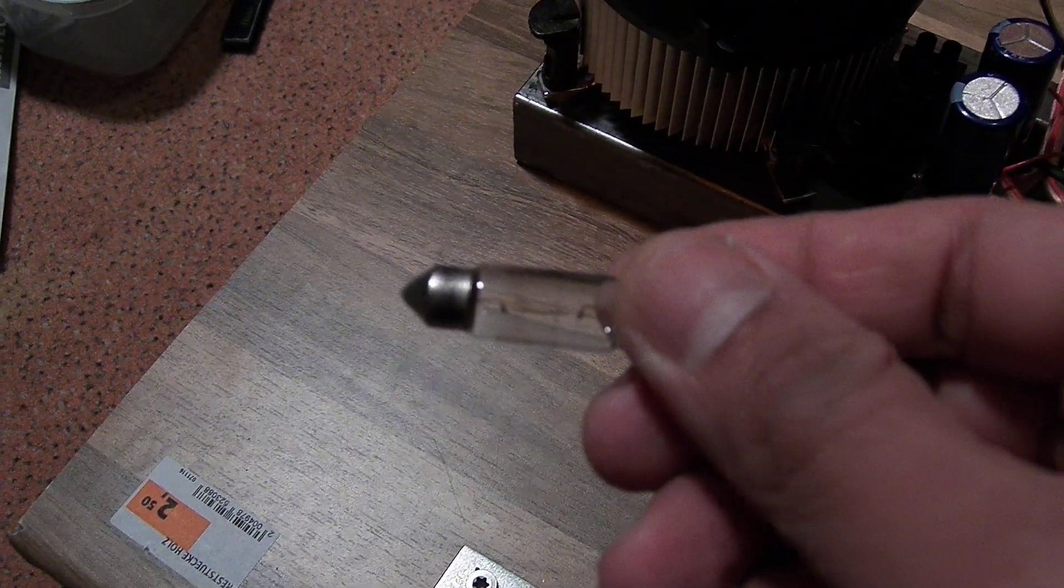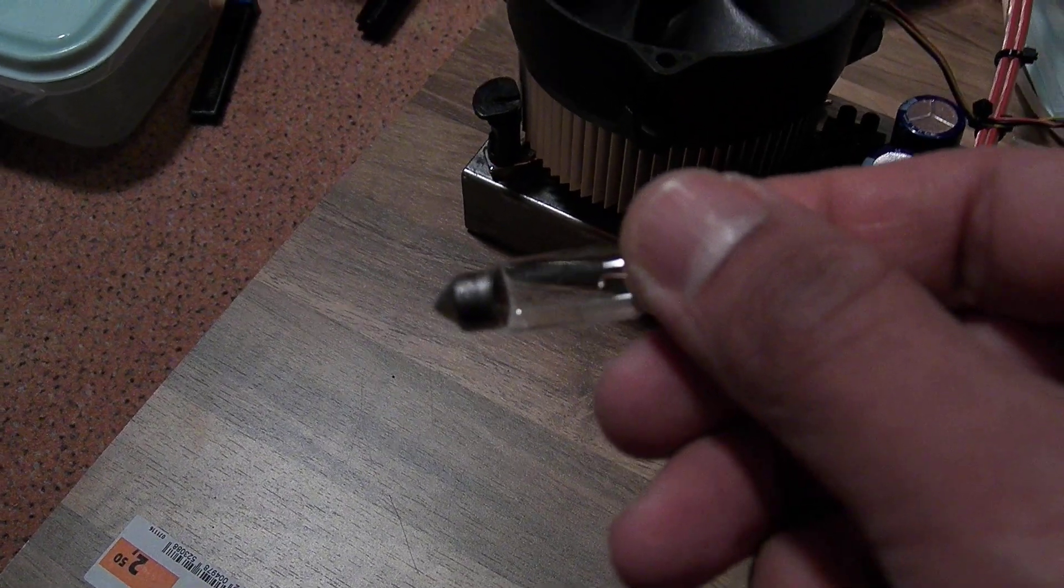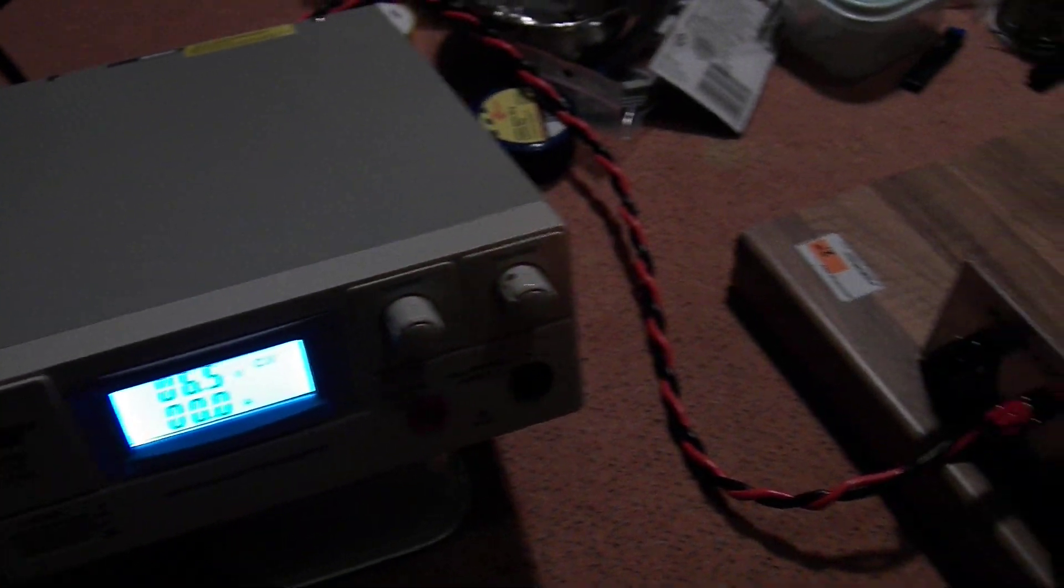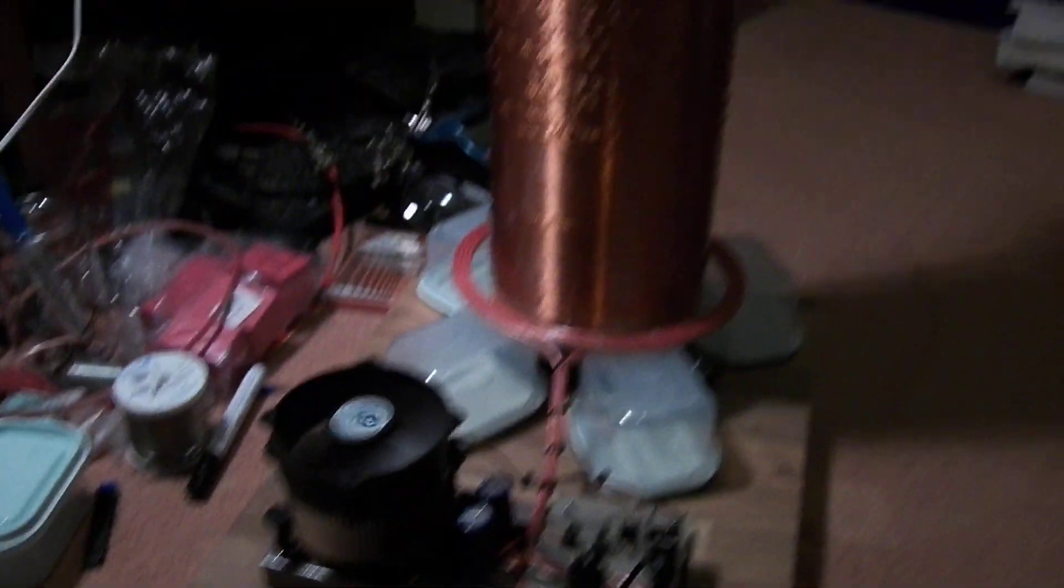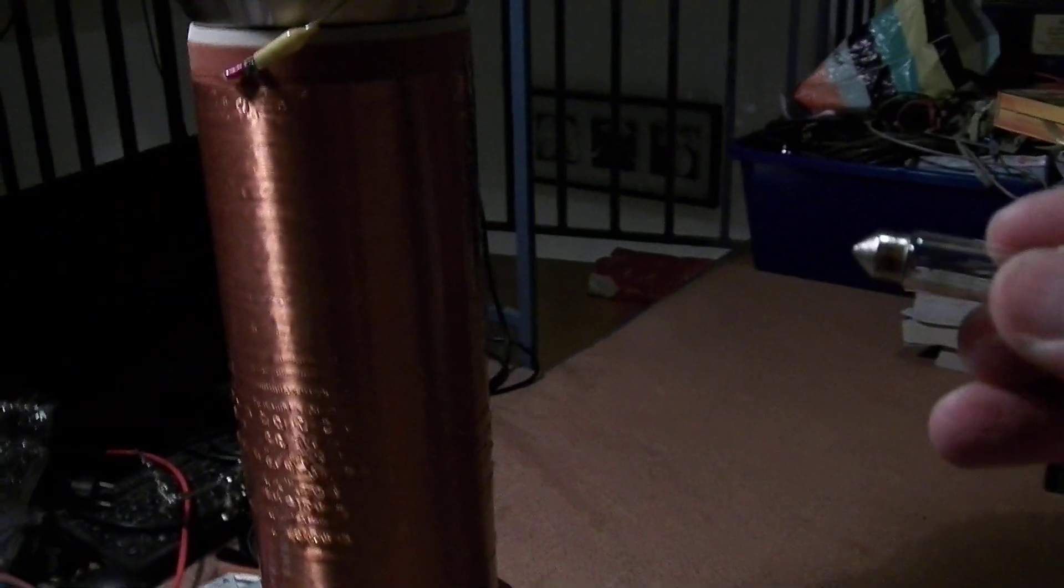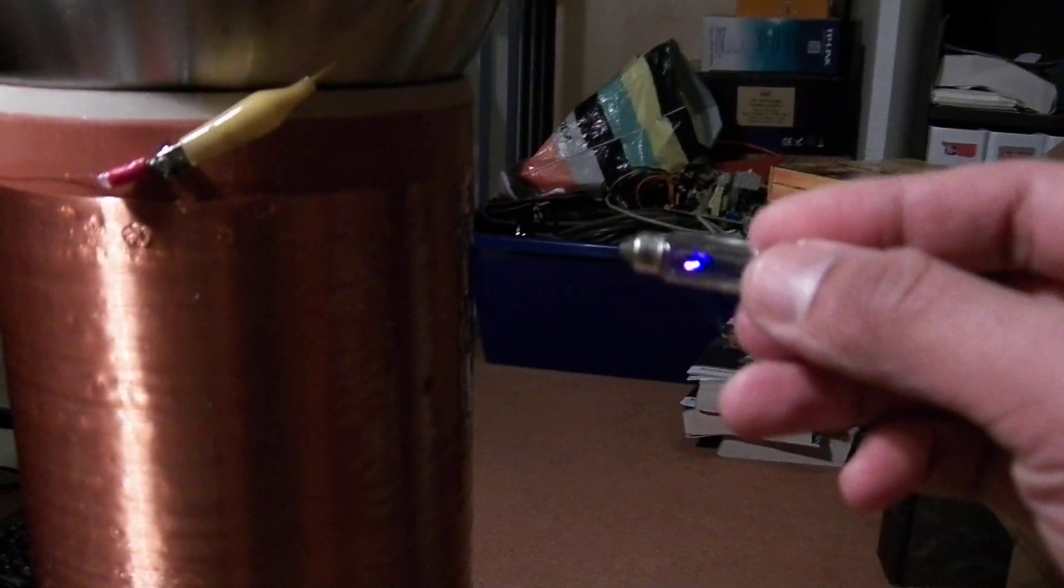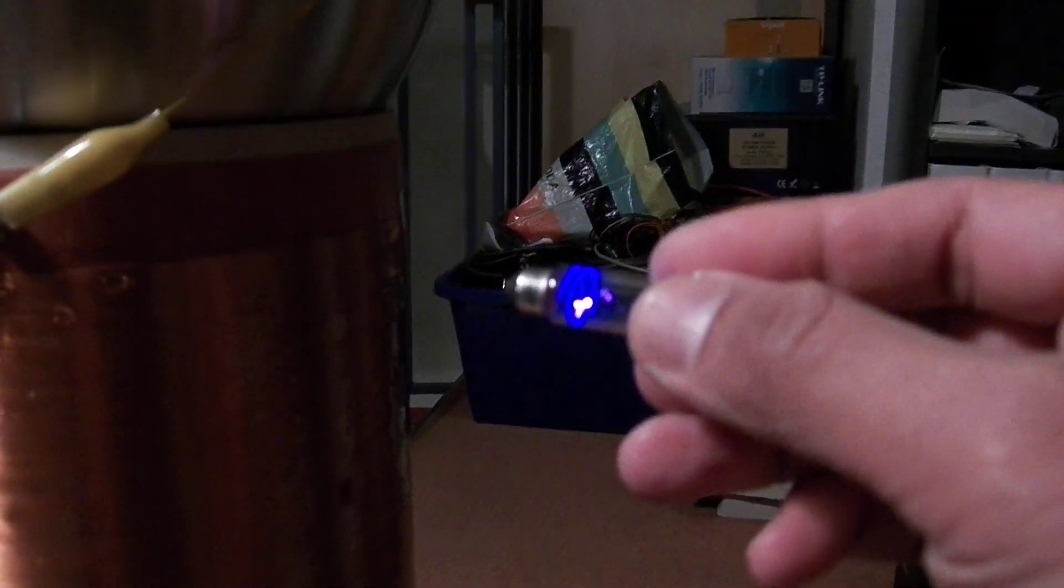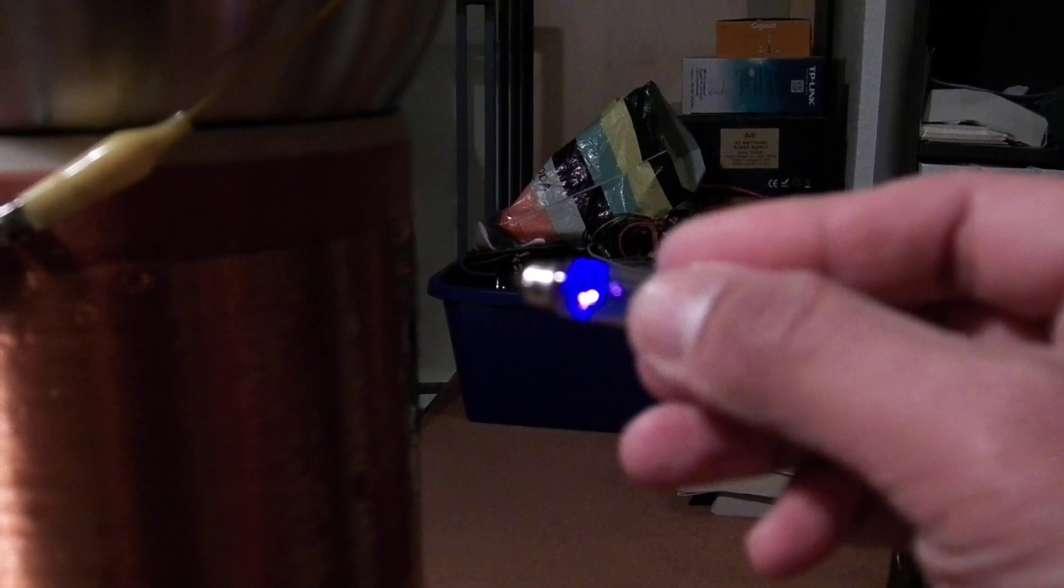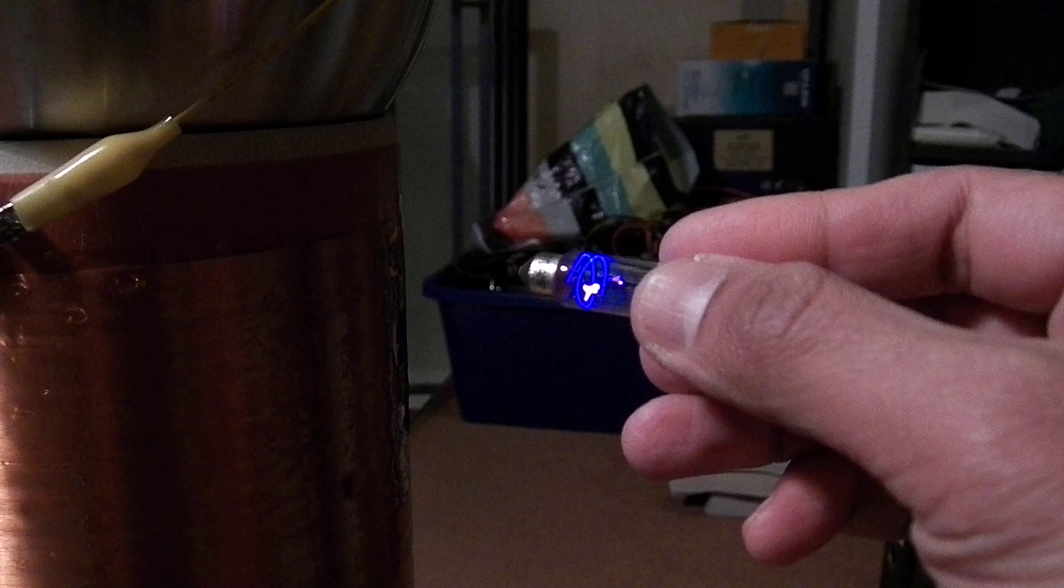I don't know if you can see the broken part of the filament. Anyway, I will turn on the Slayer exciter. You see the plasma is taking a spiraling path instead of a direct path.